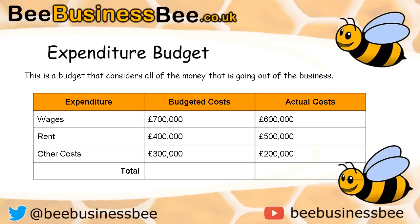Underneath there we've got the total columns. What I'd like you to do is have a go at totalling up these columns. There is a worksheet on my website bbusinessbee.co.uk you can download with all these tables. You're simply going to add them up — very straightforward.